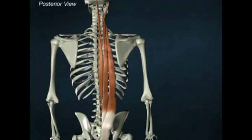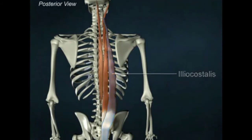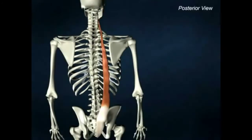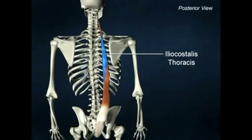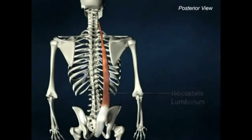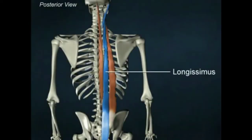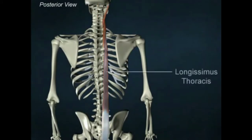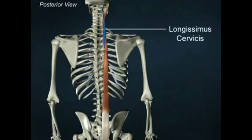The deep muscles of the back can be broken down into these groups. The iliocostalis muscle groups, which have connections on either side of the spine in the cervical, thoracic, and lumbar regions of the back. The longissimus muscle groups, which have connections in the same three sections of the spine and include the top of the neck in the capitis region.